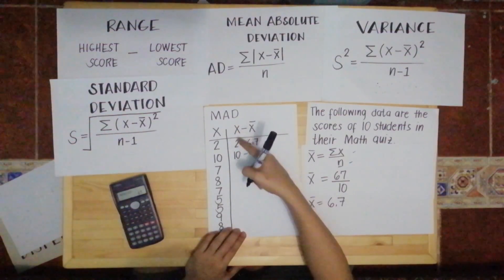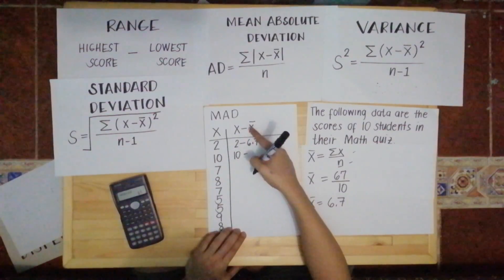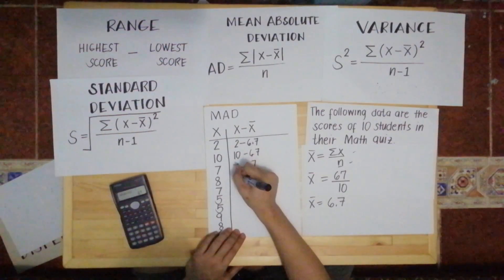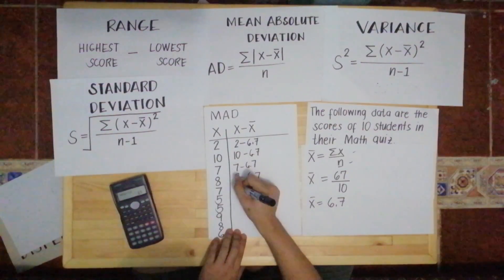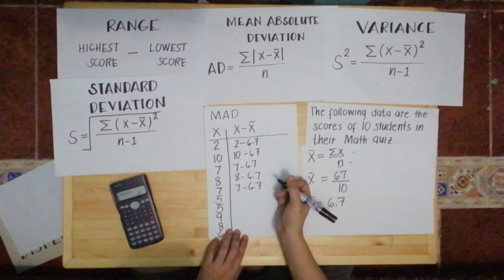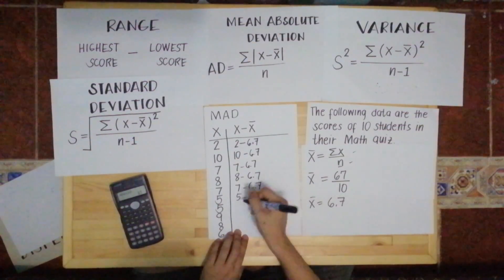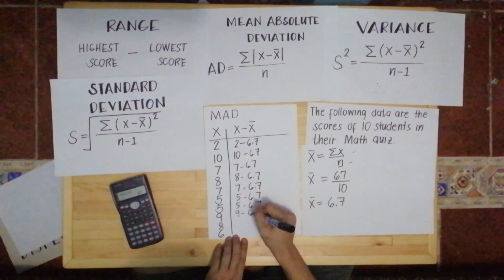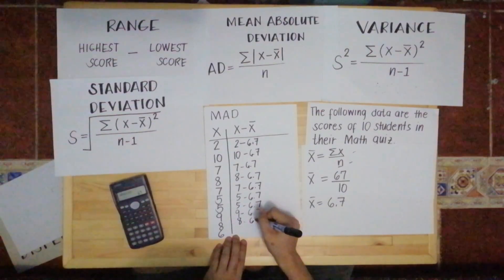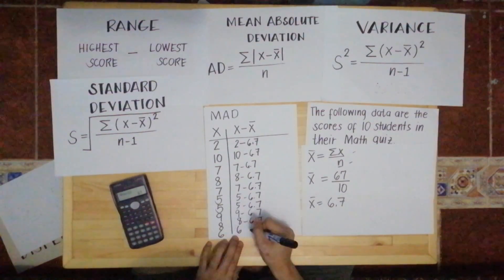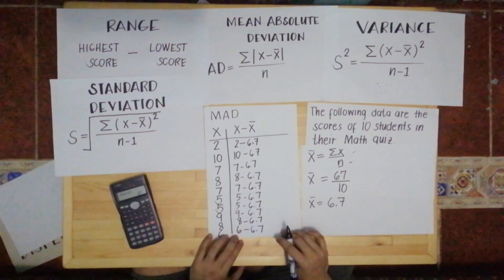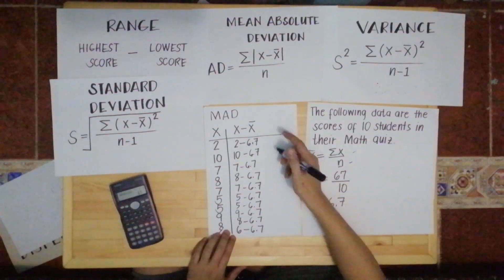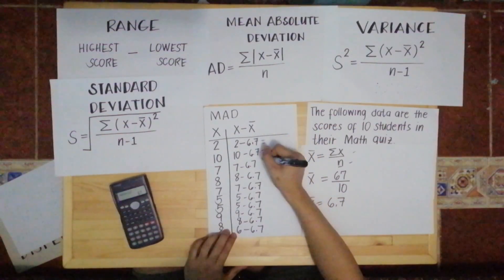That's what we'll subtract from each score. So we have 6.7. Then for the second score, 10, X minus the mean is 6.7. For every score, we only have one mean. So we get the value for each one.